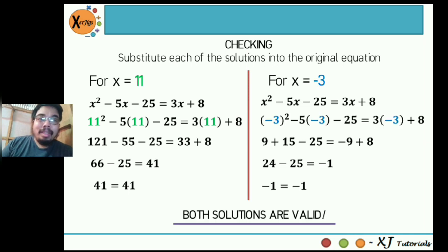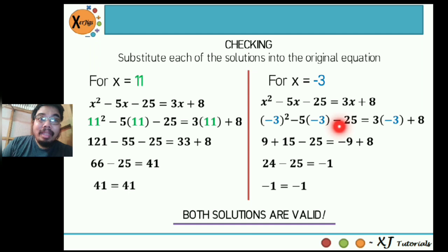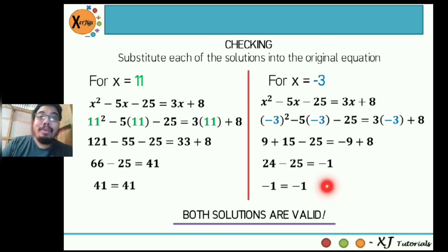For x = -3, substitute into x² - 5x - 25 = 3x + 8: (-3)² - 5(-3) - 25 = 3(-3) + 8 → 9 + 15 - 25 = -9 + 8 → 24 - 25 = -1 → -1 = -1. Therefore, x = -3 is also a solution of the quadratic equation. Both solutions are valid.